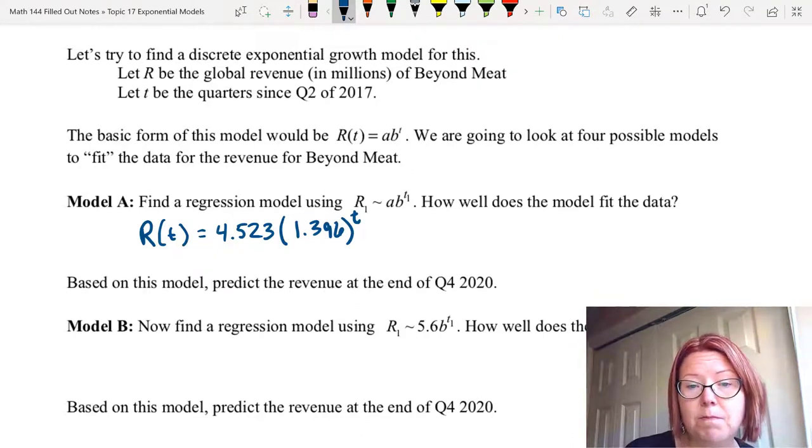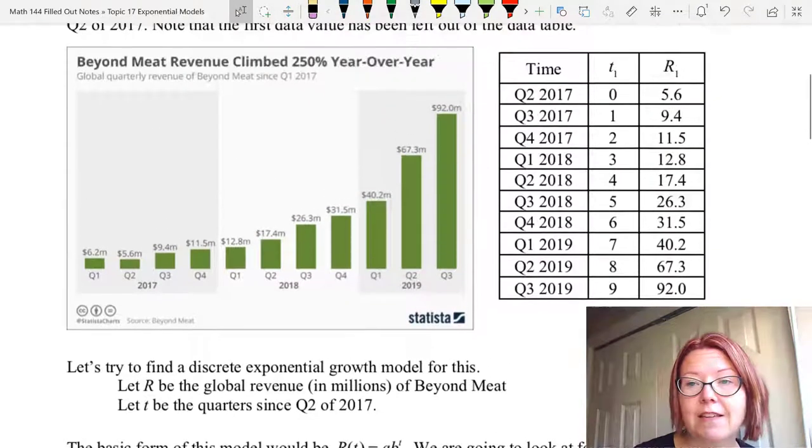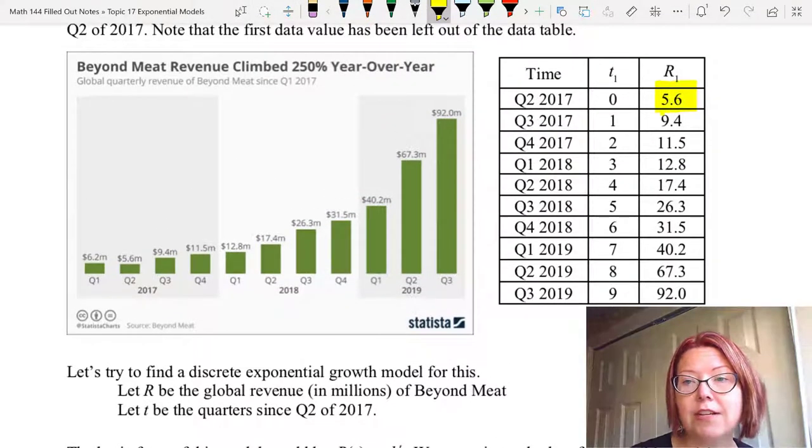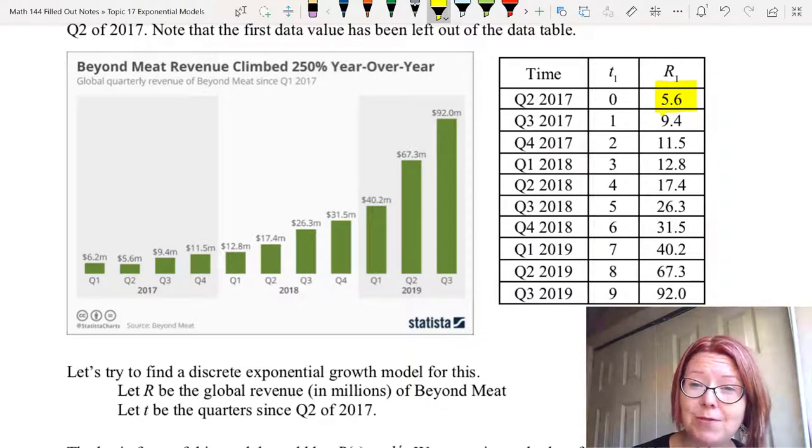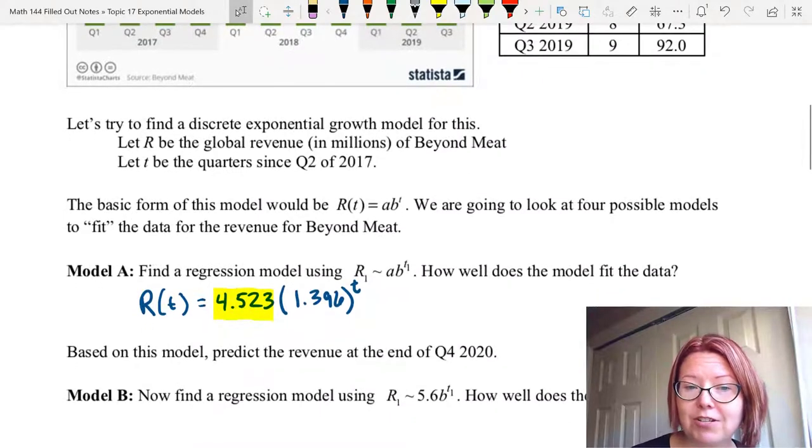It's a fairly good fit. You can see that the initial value is incorrect. We have an initial value here of 4.523 and we know from the data that the initial value is actually 5.6. Now if that's not bothersome to you, if you like the fact that the model is fitting the data and not the initial value, then this is perfectly fine and we can make predictions off this model.